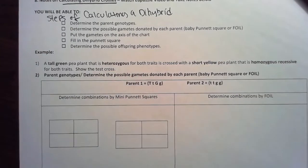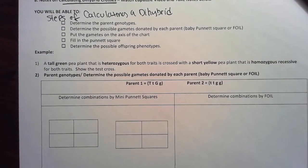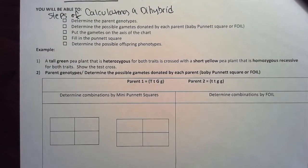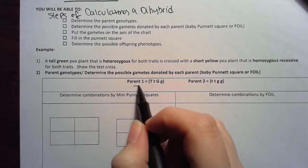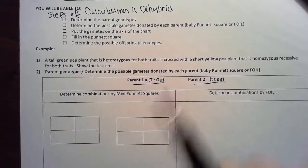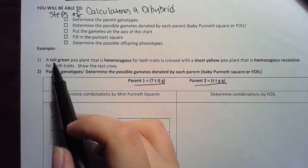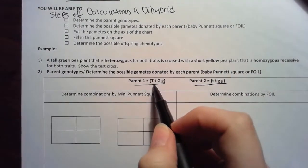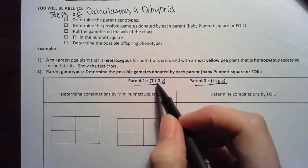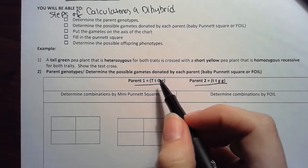A tall green pea plant, so I always want to determine the genotypes of my parents first. That's step two. It gives me my genotypes for each parent. It told me tall green pea plant that is heterozygous, so I know that I'm going to have one capital one lowercase for each of these traits. Notice that there are four letters not two, because I have two letters per one gene. Dihybrid talks about two genes.